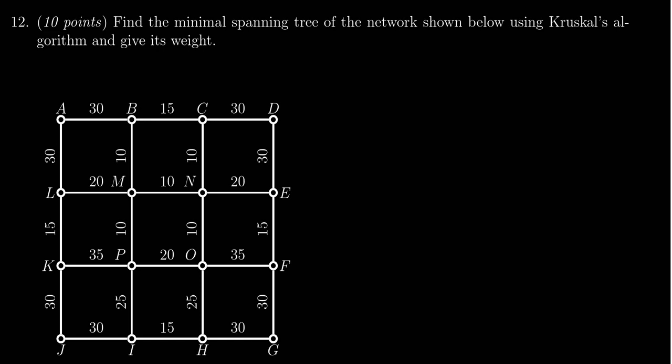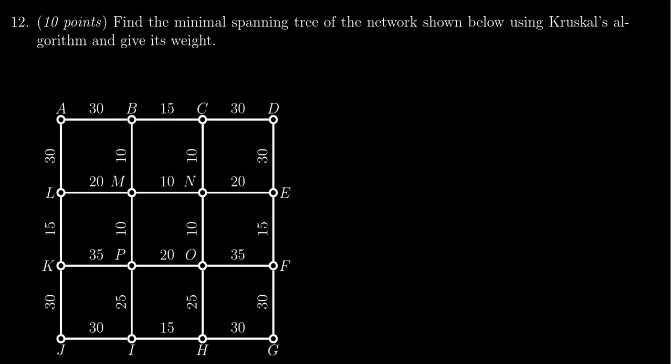In this video we provide the solution to question number 12 for practice exam number one for Math 1030, in which we have to build a minimal spanning tree for the network shown below using Kruskal's algorithm, which is basically the cheapest link algorithm. We just pick the cheapest link and avoid any cycles whatsoever. We also need to describe the cost of this minimal spanning tree when we're done.